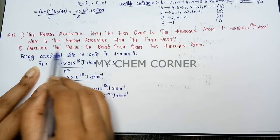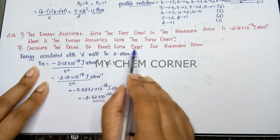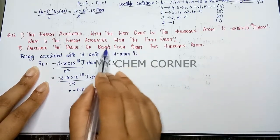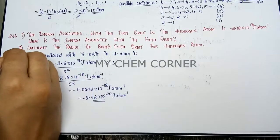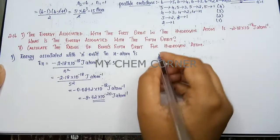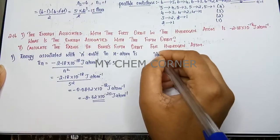The second question is calculate the radius of the Bohr's fifth orbit for hydrogen atom. Again the same orbit but we need to calculate the radius. So this is the answer for the first one. Now for the second one, you have a formula for this.